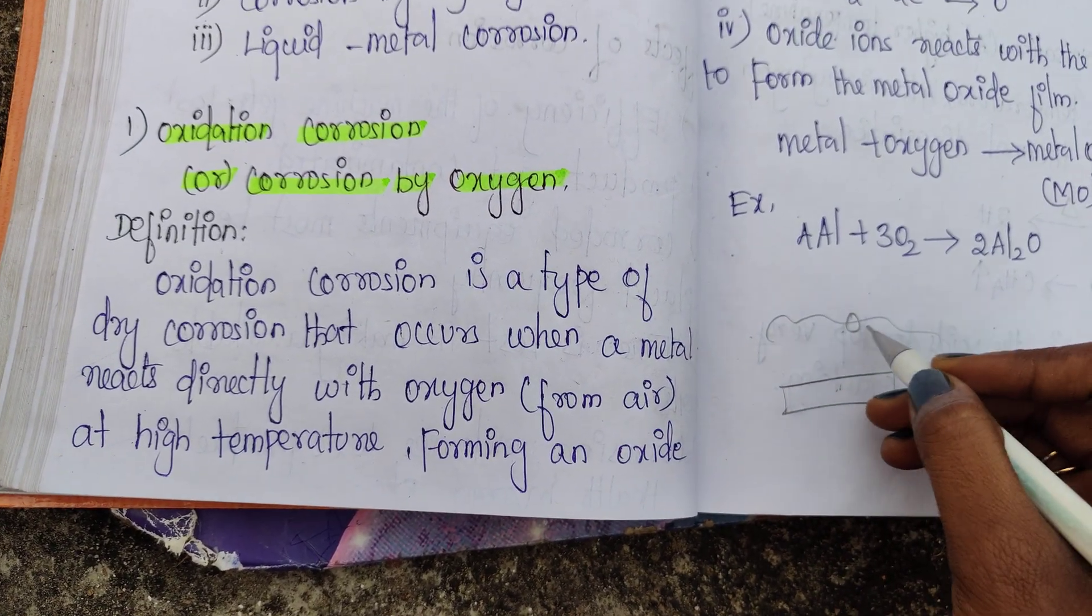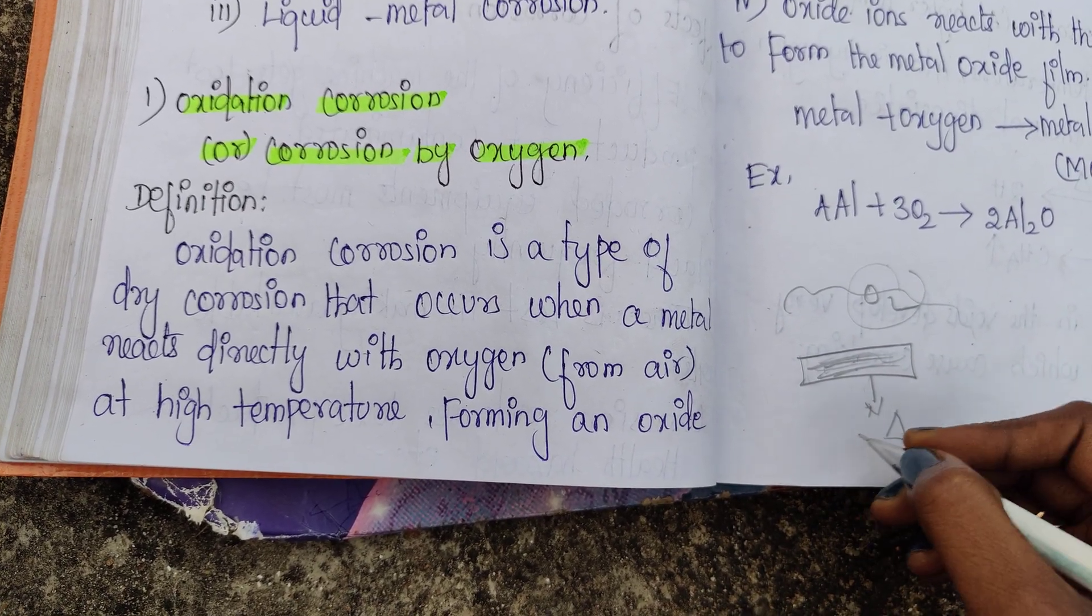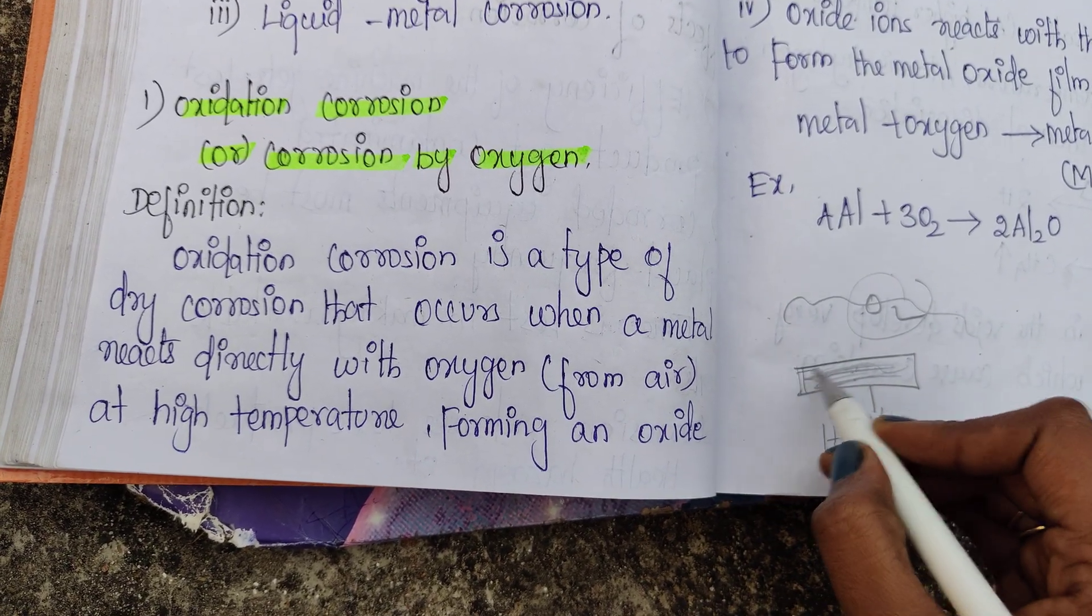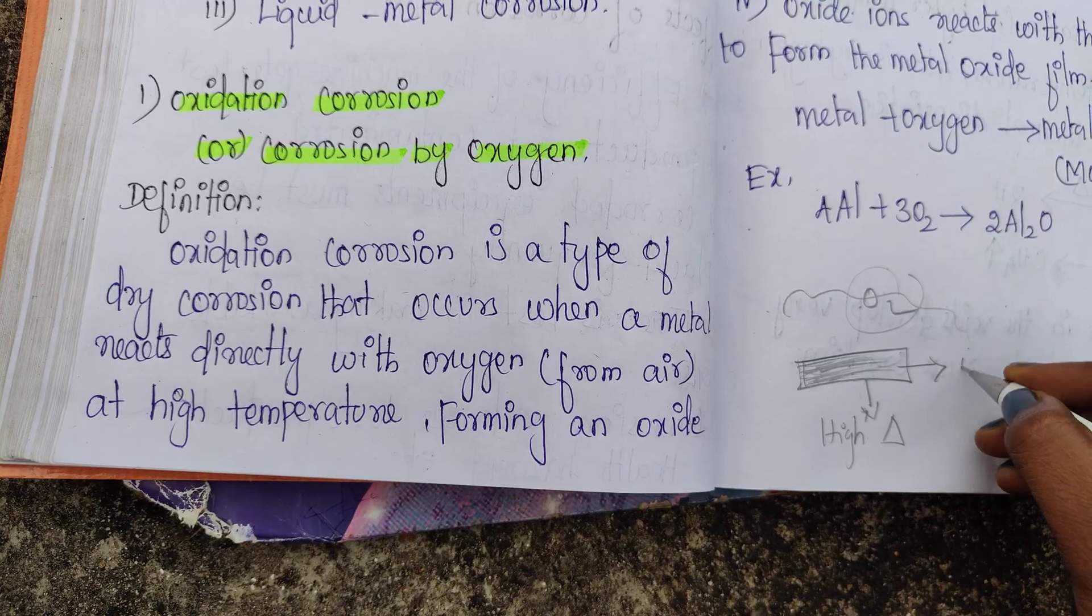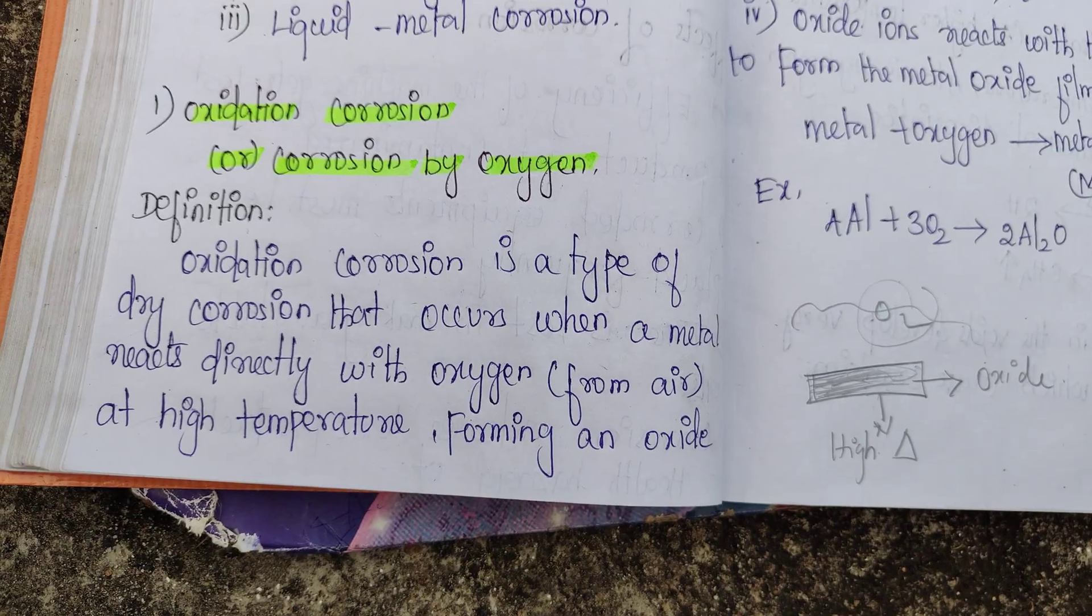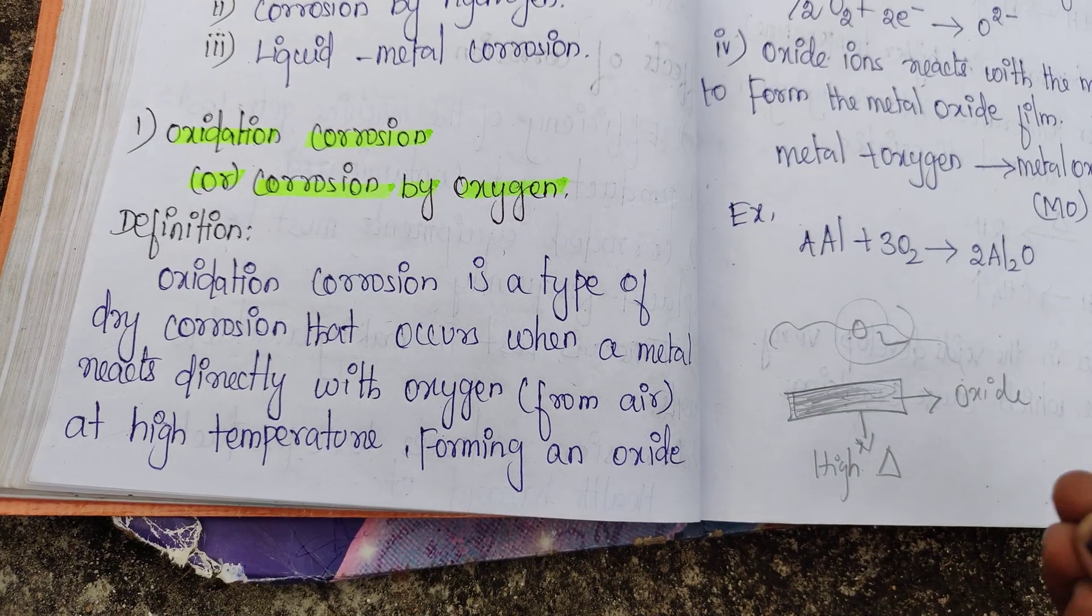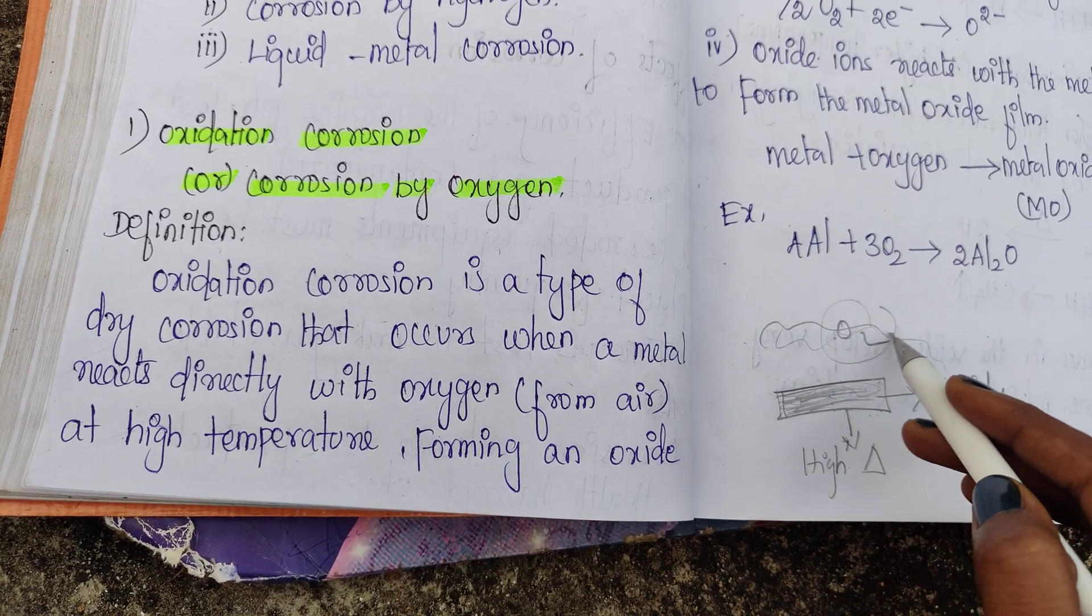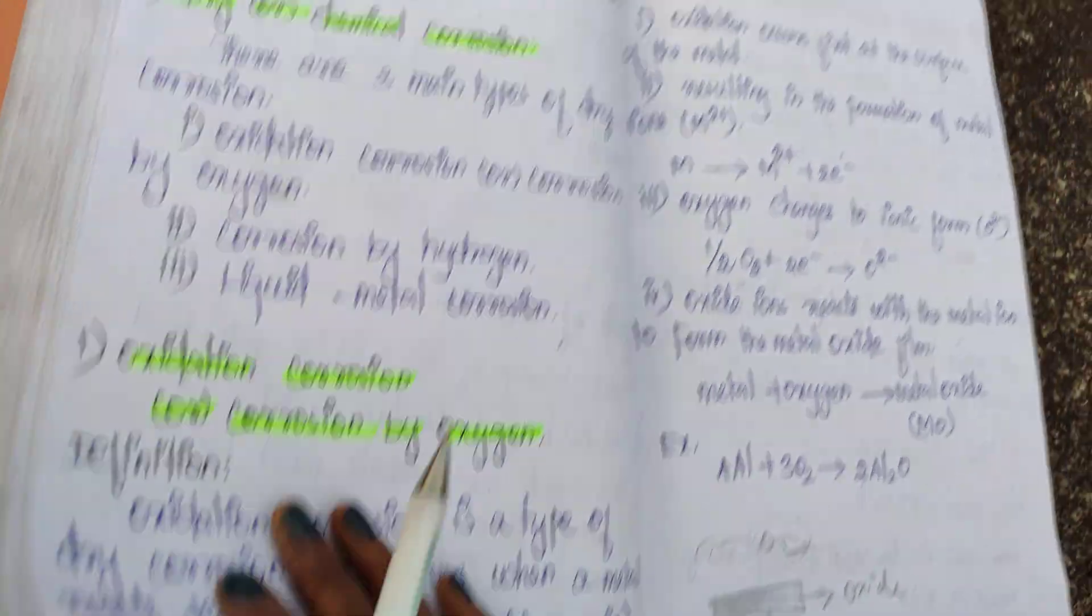Here is one metal, here is the environment. In oxidation corrosion, oxygen from the environment reacts with the metal at high temperature.